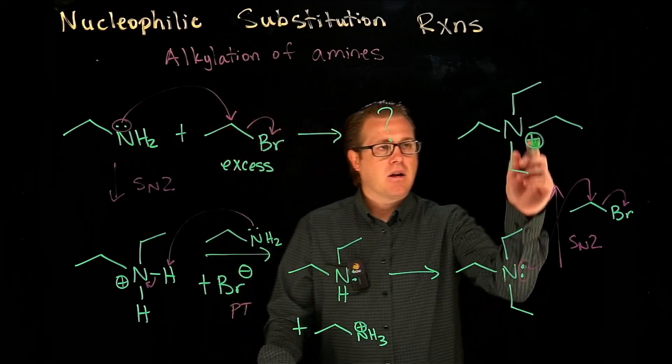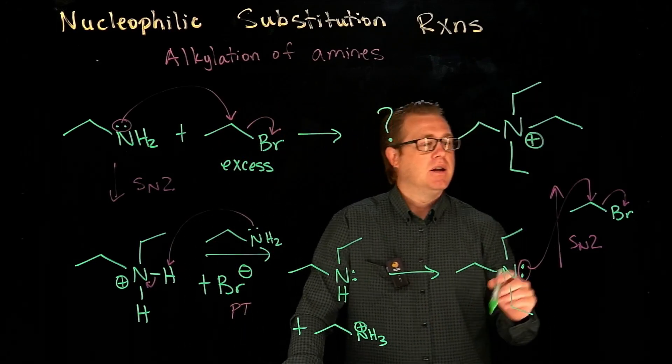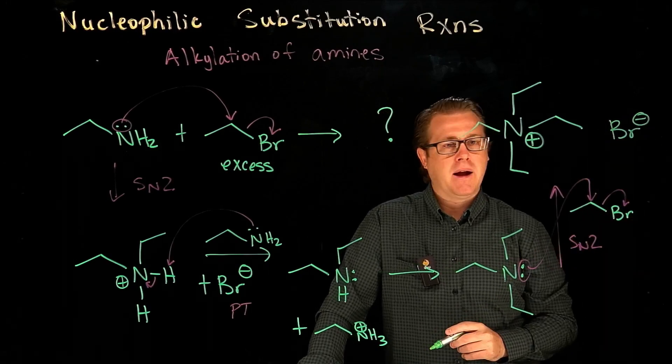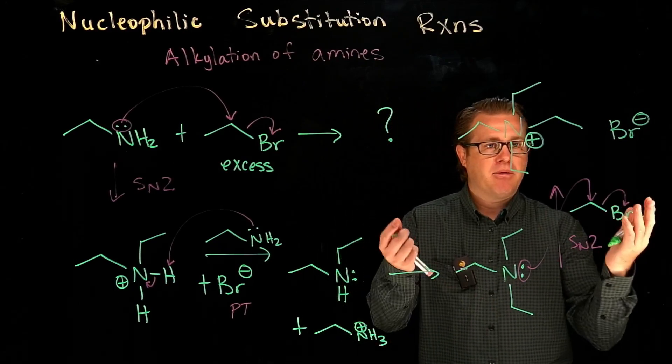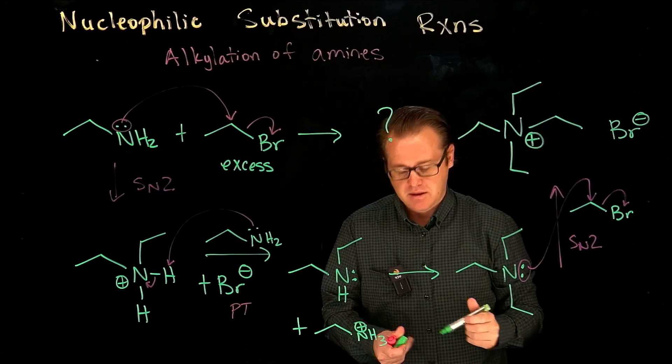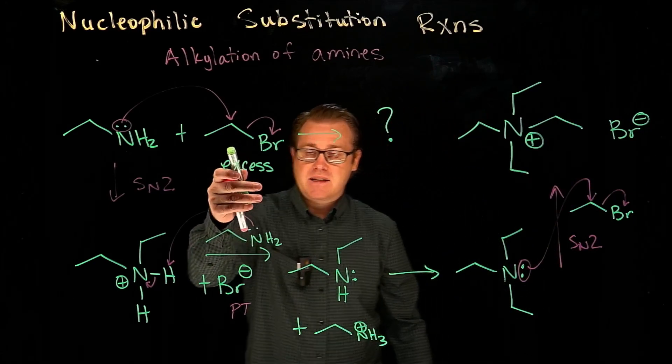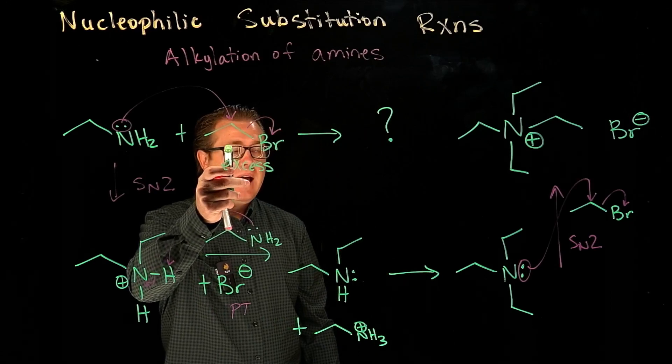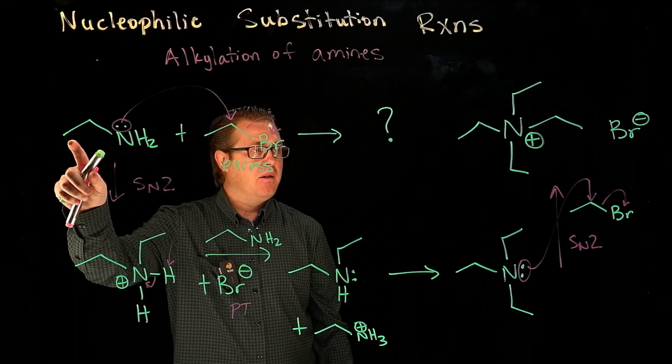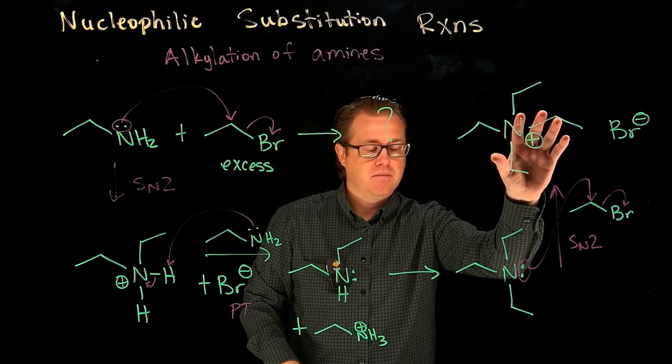So that is our quaternary ammonium salt, and we call it a salt because what do we have floating around? We're going to have our bromide floating around. So when we evaporate off all the solvent, we're going to get this salt. So what do we have? If we have excess alkyl halide, we can convert most, if not all, of our amine into the quaternary ammonium salt, okay?